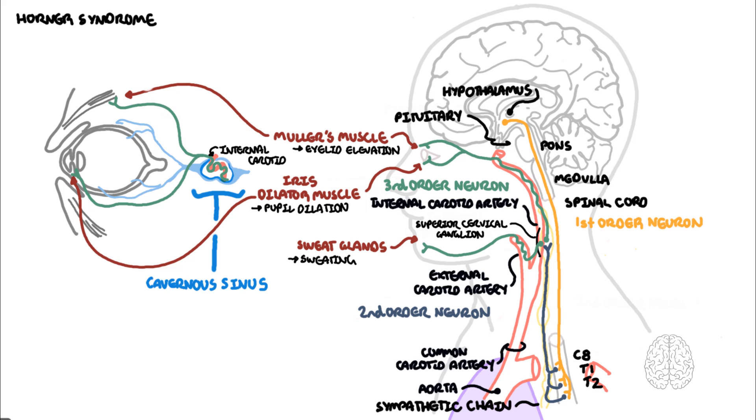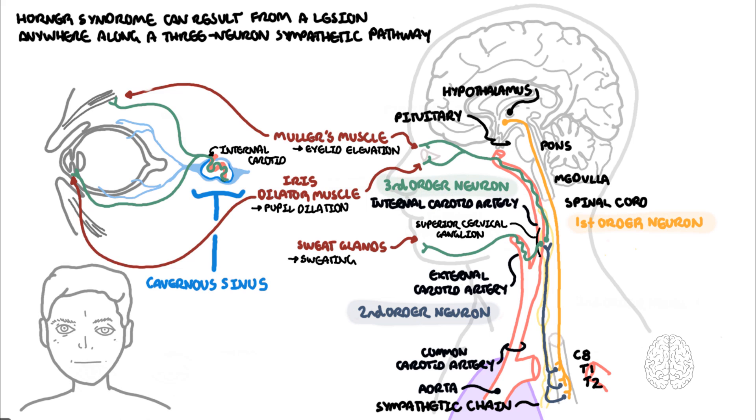Horner's syndrome can result from a lesion anywhere along the three-neuron sympathetic pathway that originates in the hypothalamus, the first, the second or third-order neurons. This means that everything downstream would not occur. So you don't have eyelid elevation and you don't get pupil dilation because the iris dilator muscle is not innervated properly and you don't sweat. As a result, you get the clinical features of Horner's syndrome: ptosis, meiosis, and anhydrosis.